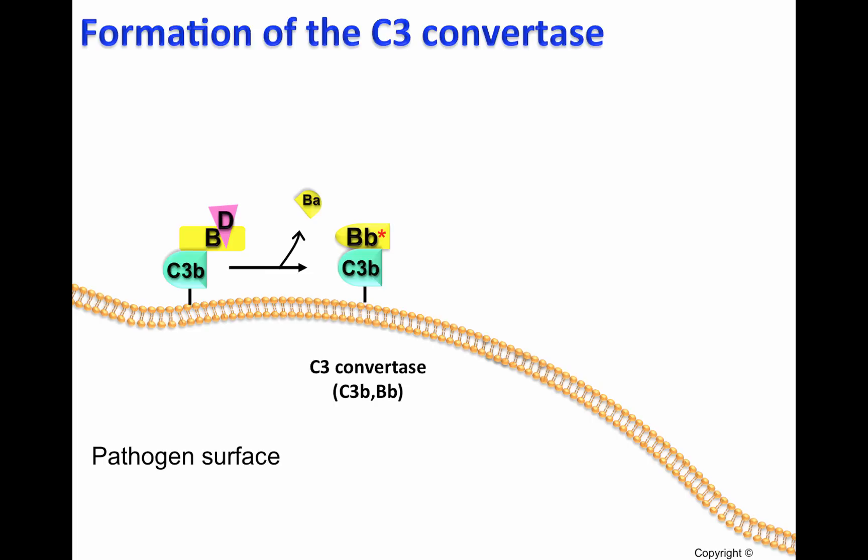This C3 convertase will be able to cleave C3, generating C3a and C3b. If C3b is close enough to the cell surface, it will covalently attach to the cell surface of pathogens, what we call C3b deposition.